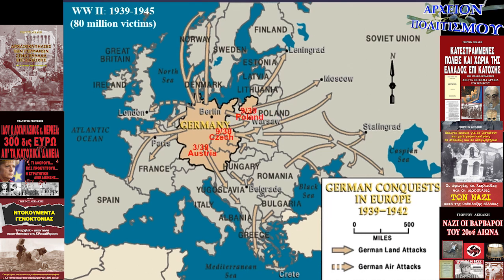In 1940, Germany attacked Denmark, Norway, France, Belgium, Luxembourg, Holland and England. And in 1941, Yugoslavia, Greece and the Soviet Union. A year after the start of the Second World War, the Tripartite Pact was concluded — Japan was added to the Axis powers of Germany and Italy. After the Japanese air attack on the U.S. fleet at Pearl Harbor in 1941, the United States declared war on Japan and next on Germany and Italy. Thus, the United States of America entered the war on the side of the Allied powers.